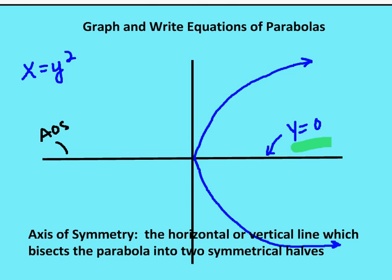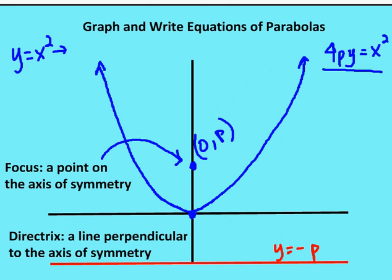There are two other components we want to talk about with a parabola. The first is called the focus, and the second is called the directrix. The focus is a point on the axis of symmetry, so it's always important to be able to find the axis of symmetry. The directrix is a line that runs perpendicular to the axis of symmetry.